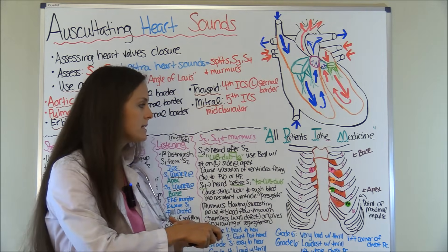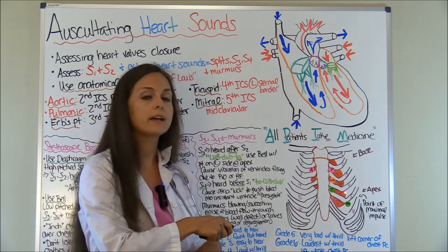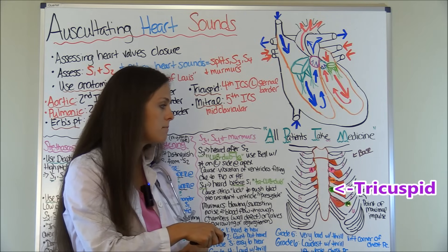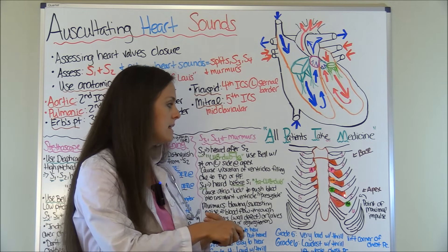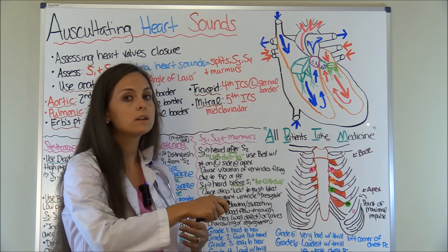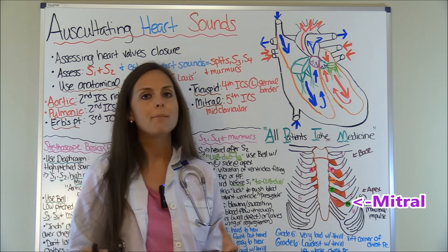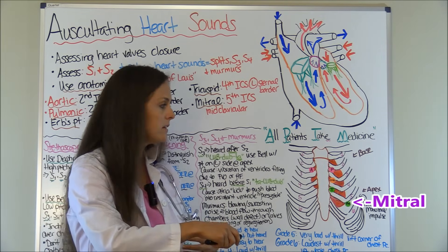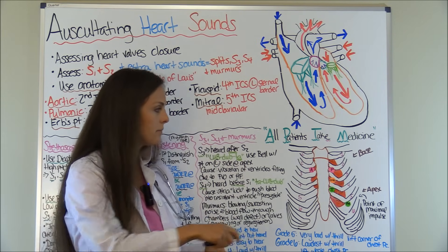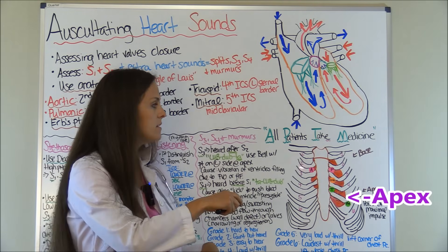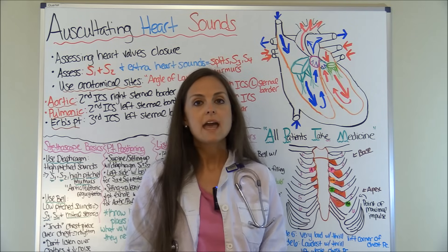Then you have the fourth intercostal space where you find the tricuspid valve on the left side. The tricuspid and mitral valves closing together simultaneously produce S1, and they are found at the base. Then you go down a little to the fifth intercostal space at the midclavicular line — the midpoint of your clavicle — where you find the mitral valve, also called the bicuspid valve. These are your atrioventricular AV valves, and this is also where you hear the point of maximal impulse. The bottom of the heart is the apex; the top is the base.